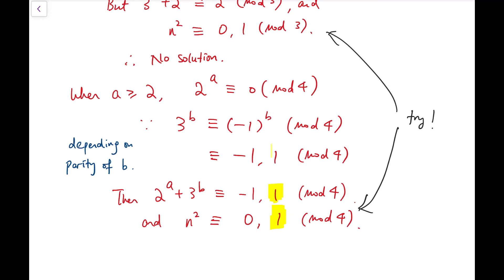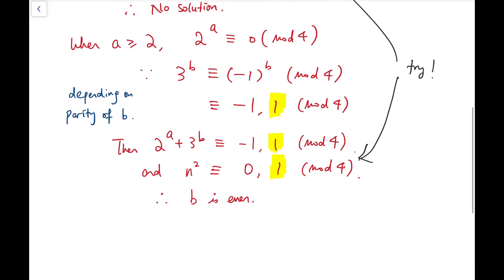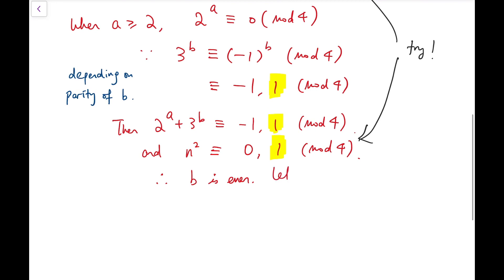And more importantly, 3 to the power of b is 1 mod 4. And that means b has to be an even number. b is an even number.